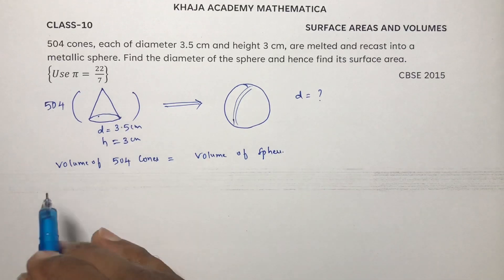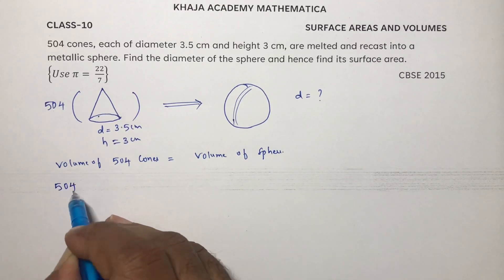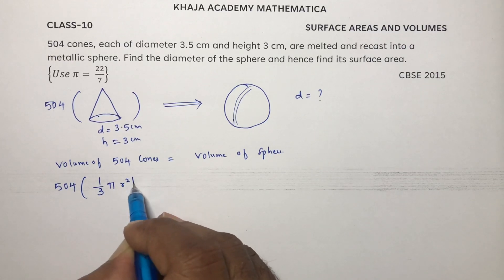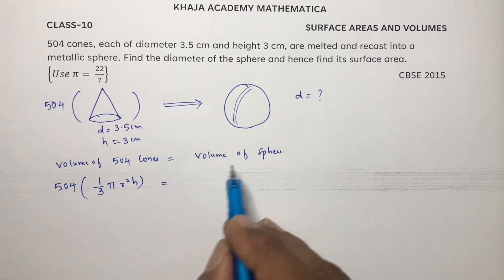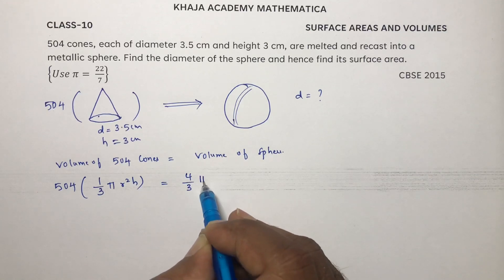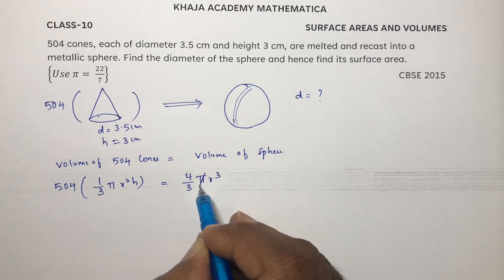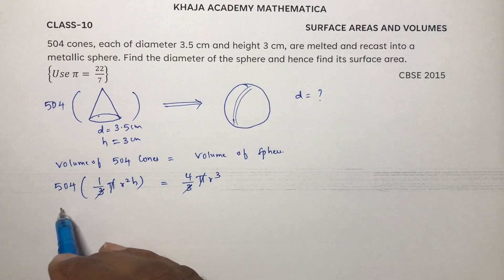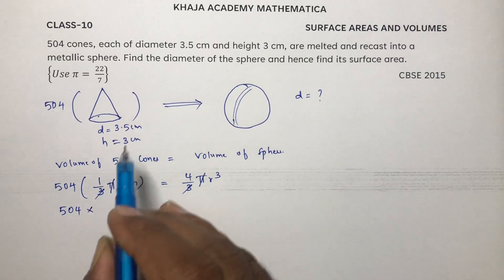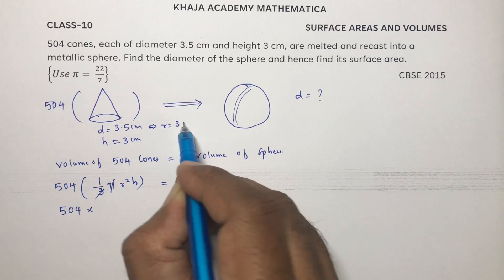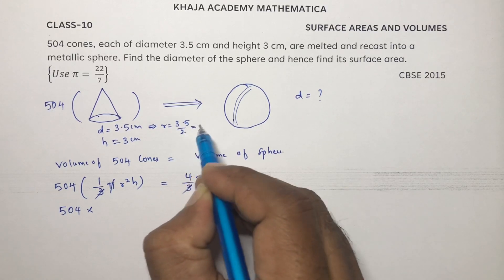So 504 times the volume of a cone — which is 1/3 π r² h — equals the volume of the sphere, which is 4/3 π r³. Pi and pi cancel, and 3 and 3 also cancel. Now we substitute the values: diameter is 3.5, so radius will be 3.5 divided by 2, which is 35 over 20.